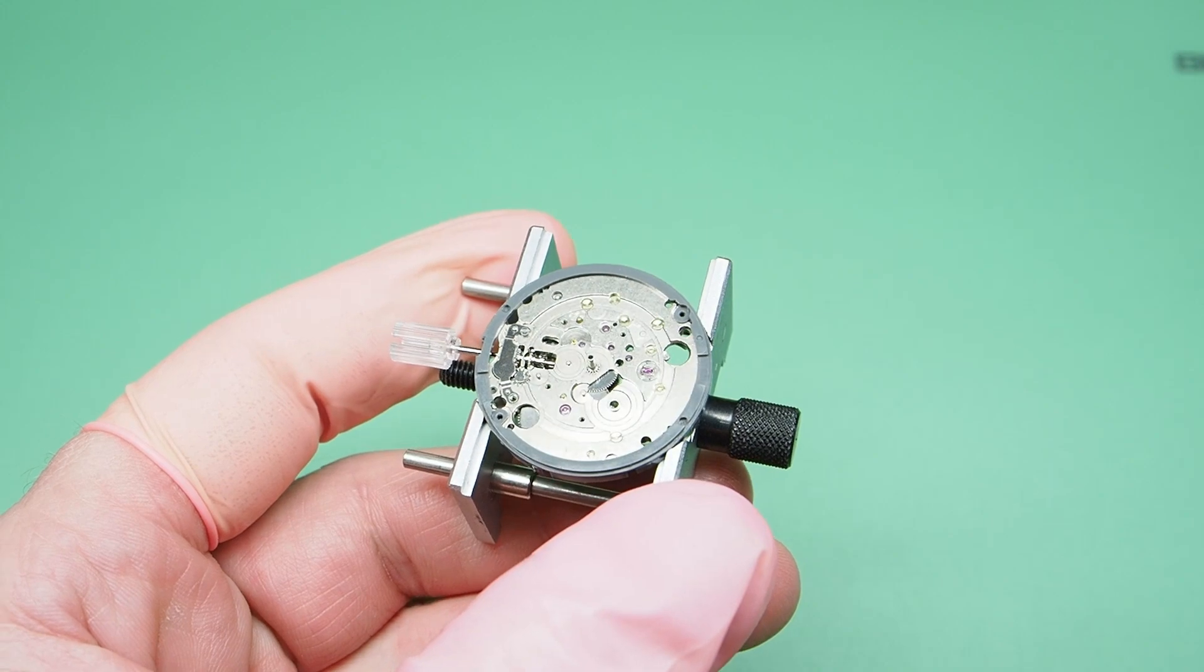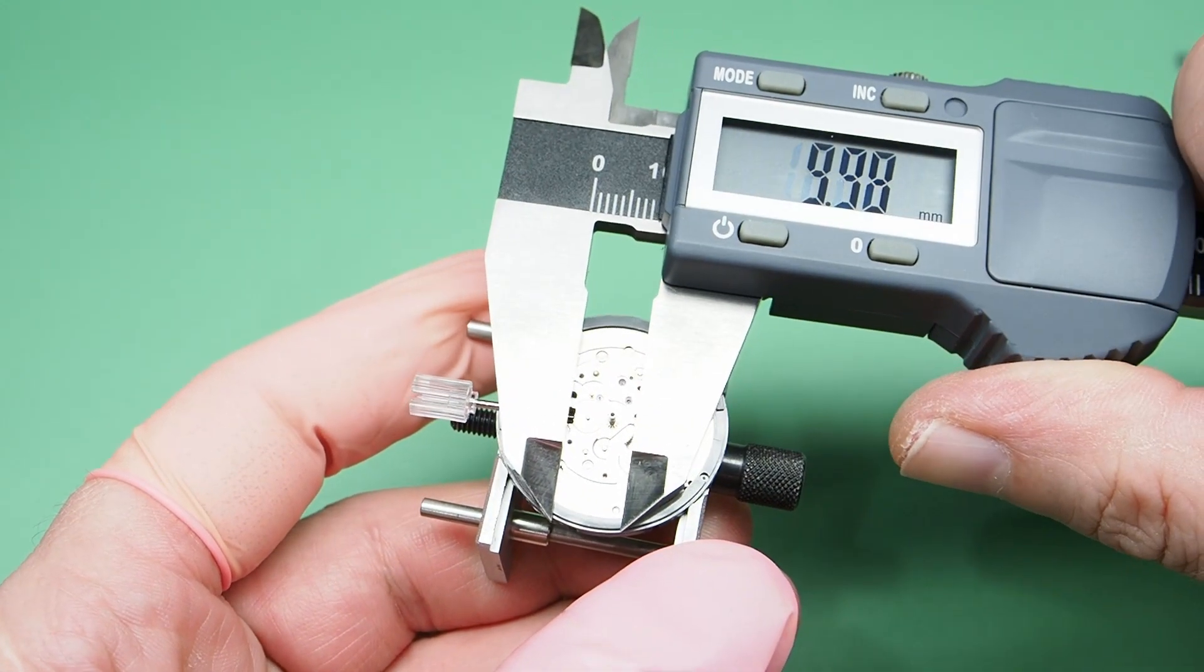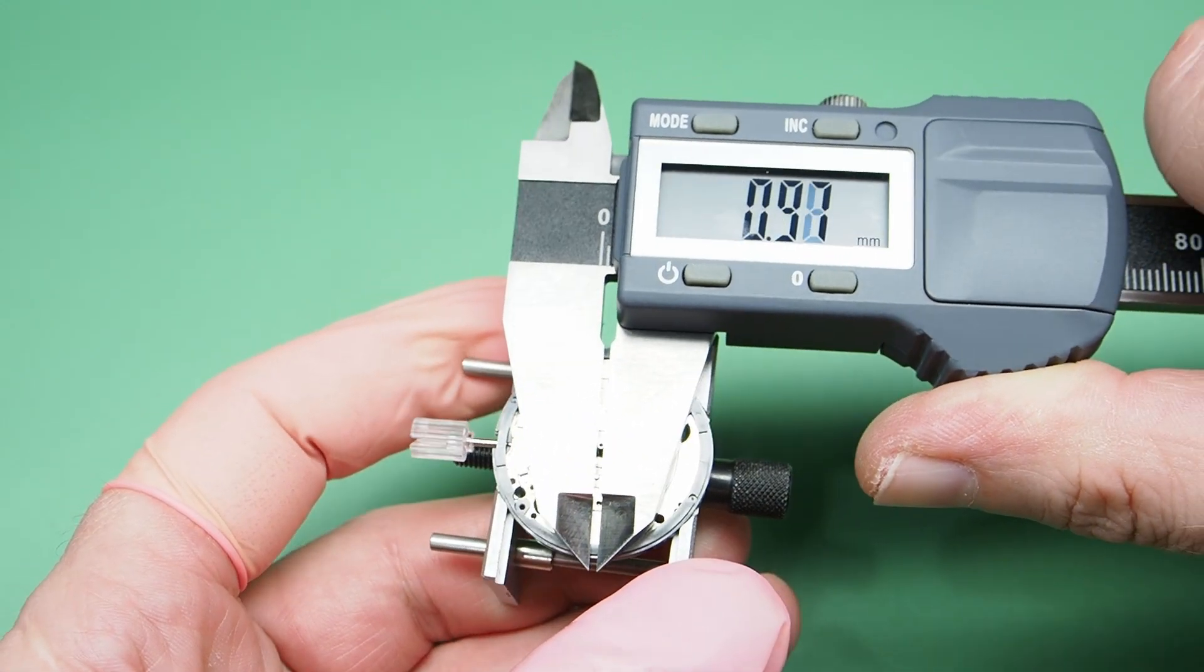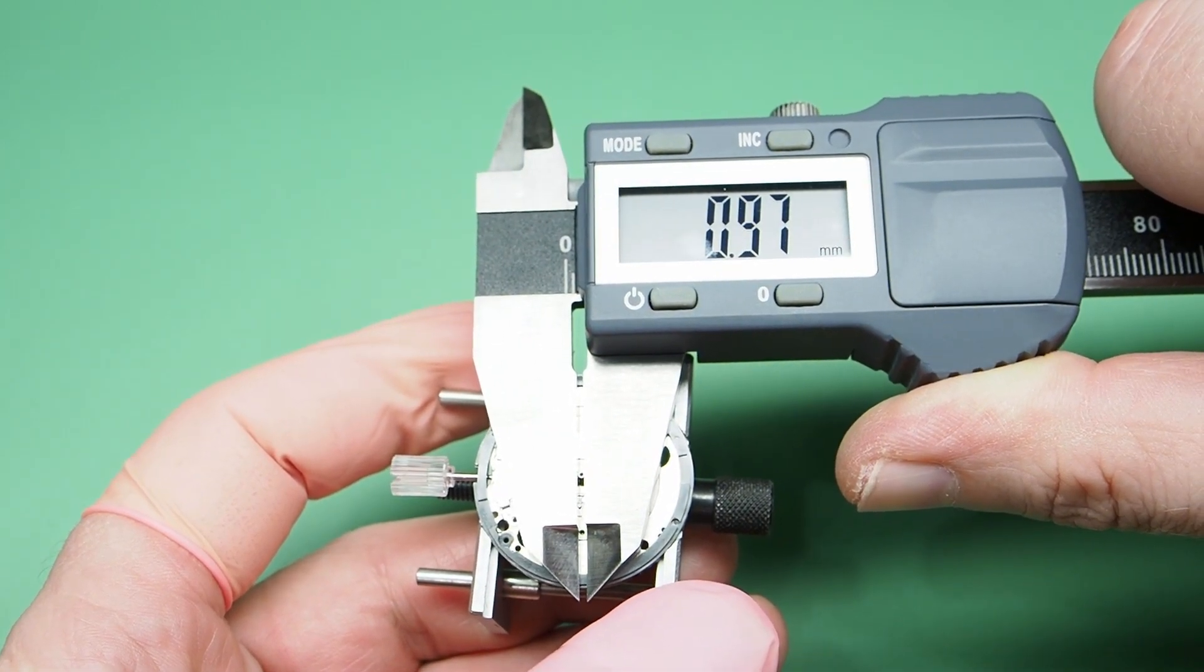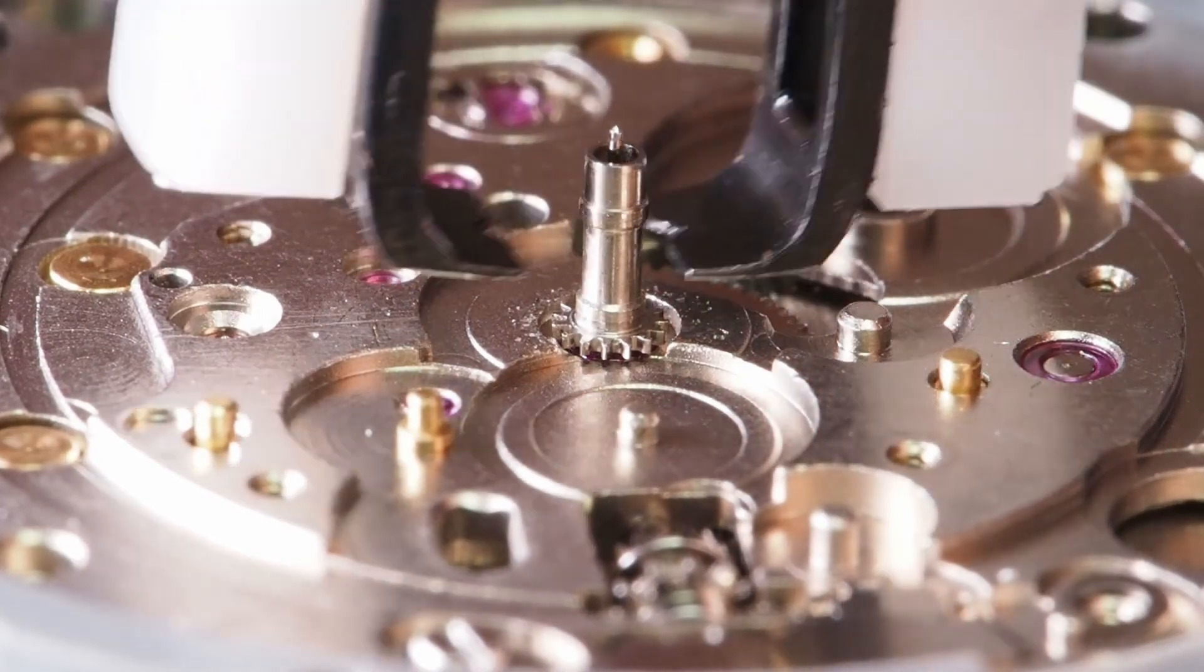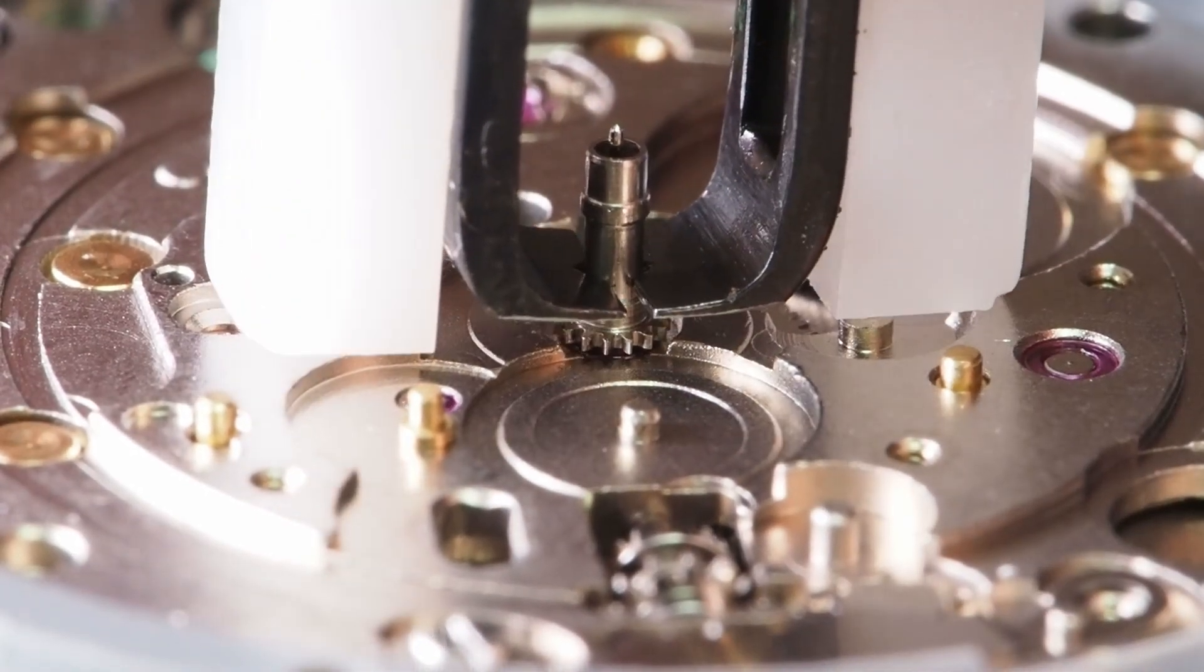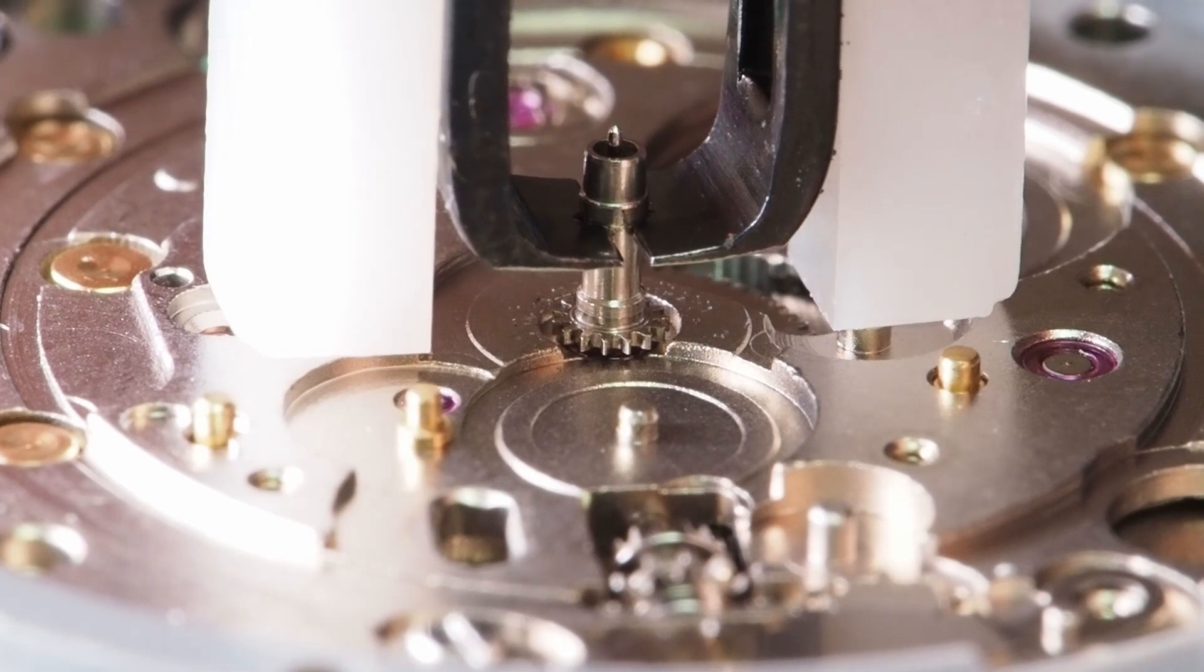This is our second cannon pinion and the diameter of this cannon pinion is 0.97 mm. We'll start with the Presto tool. And as you can see, it's no problem at all.